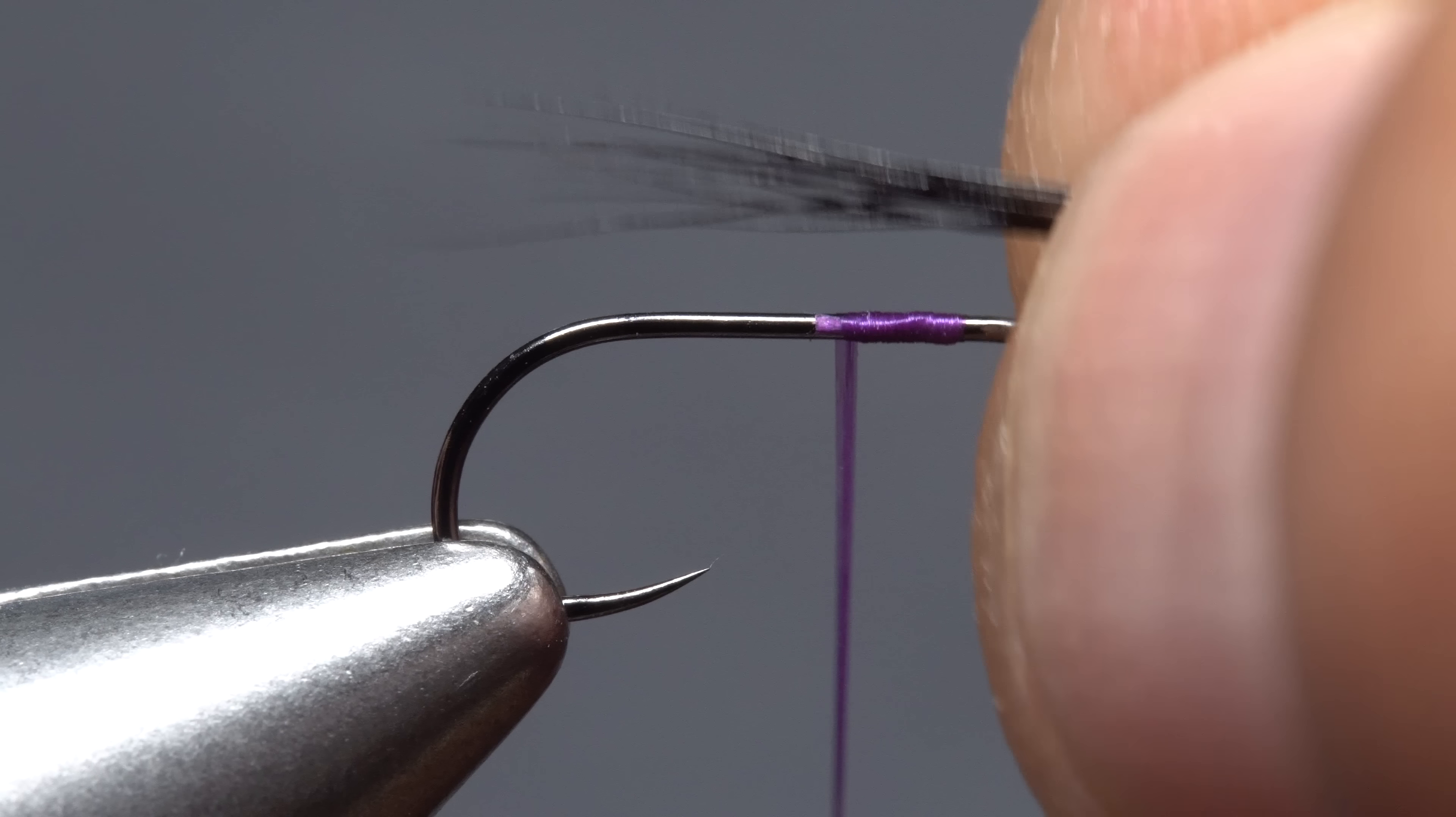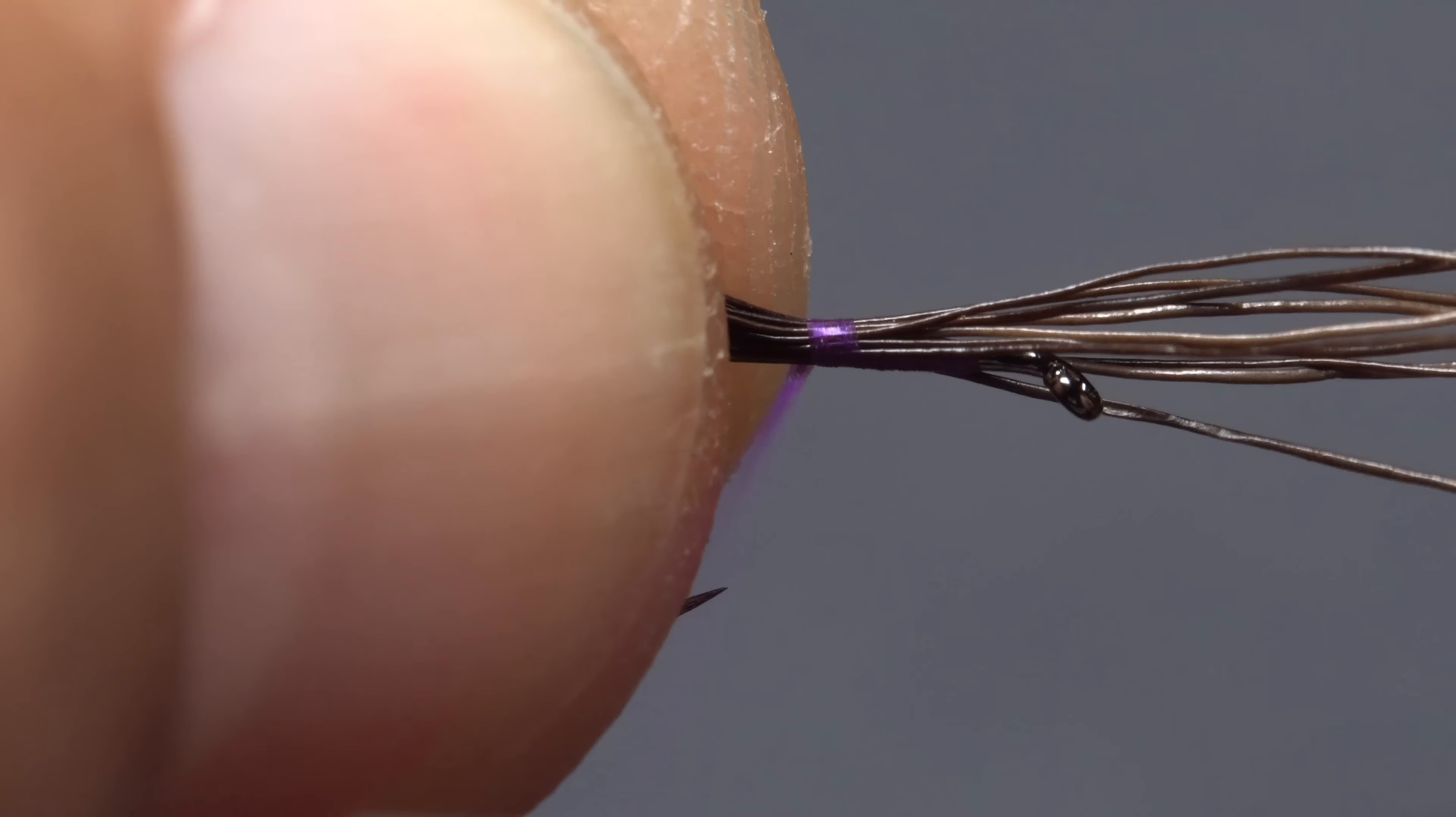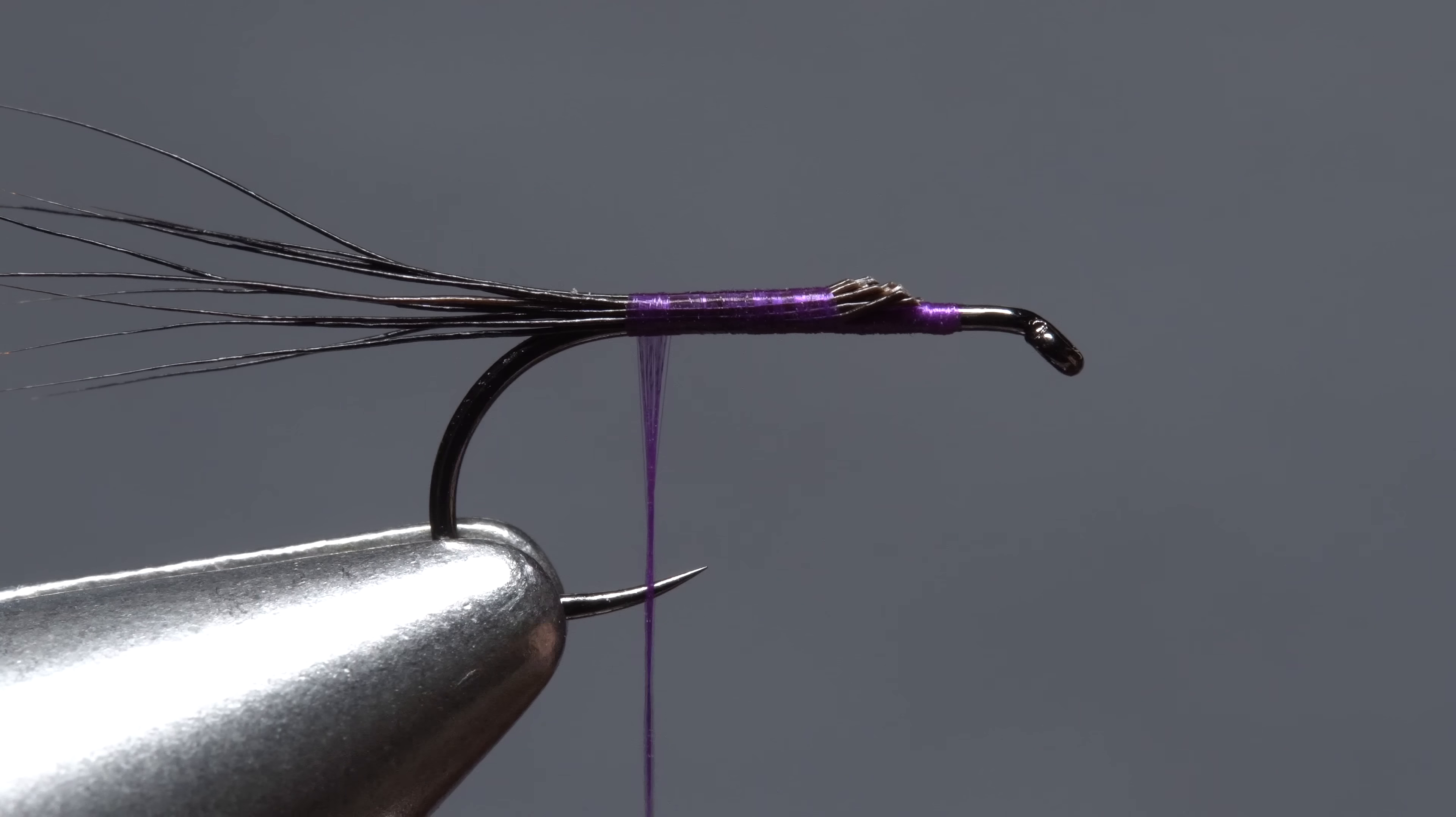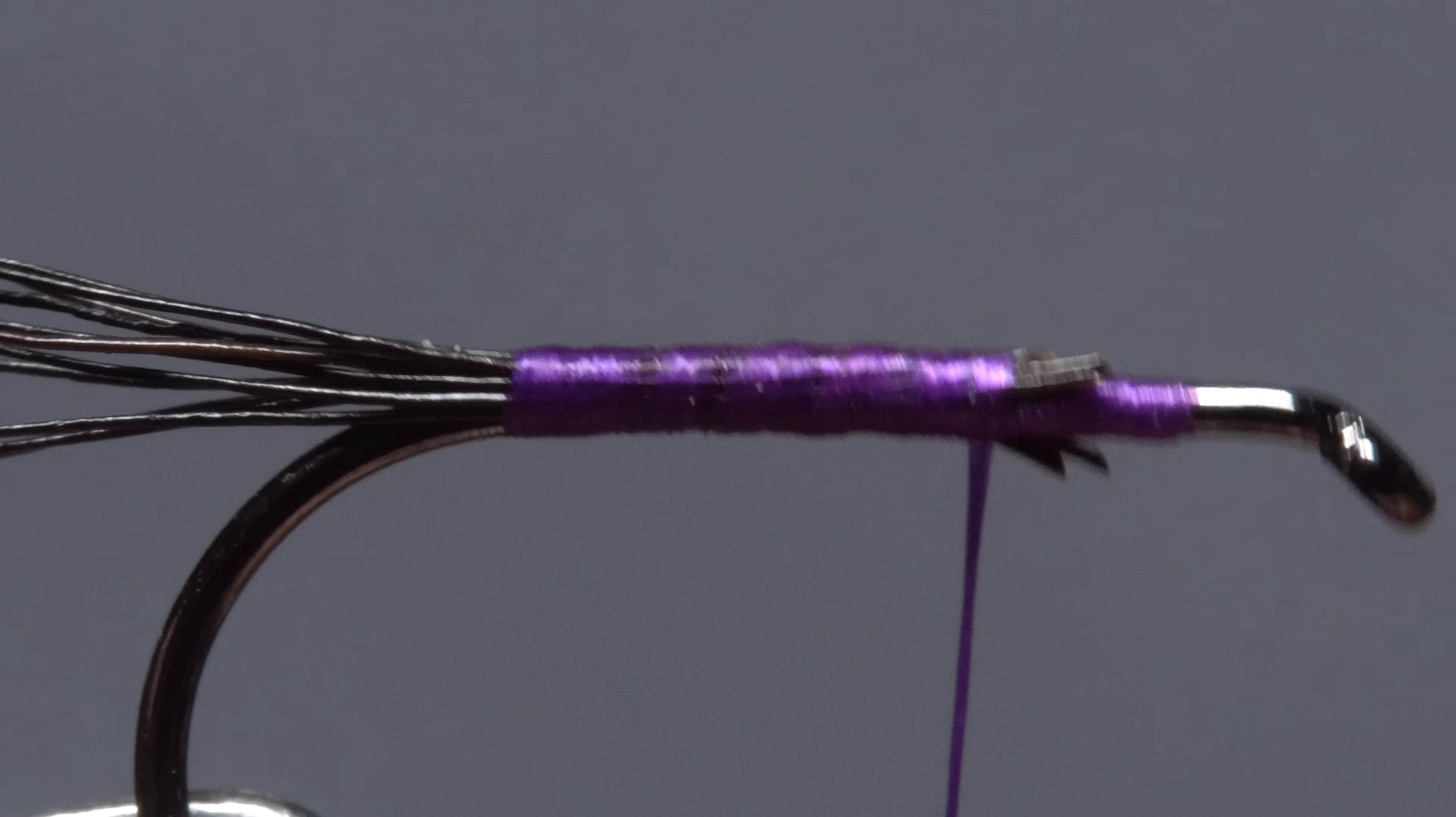Measure to form a tail about a hook shank in length, then transfer that measurement rearward to the start of the bend. Start taking thread wraps to secure the hair to the top of the hook shank. Make sure it's bound down really well all the way to the start of the bend. Lift the butt ends up and snip them off at a shallow angle. Advance your tying thread forward up the hook shank, covering the butt ends along the way.